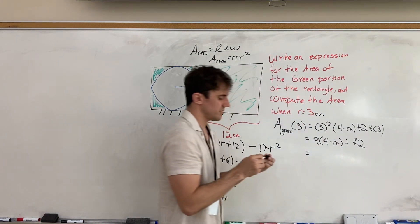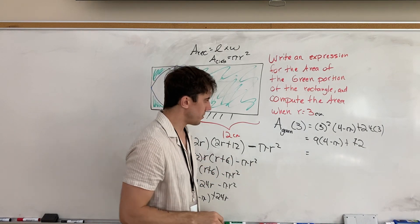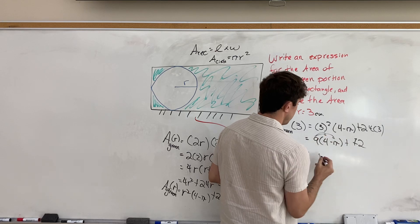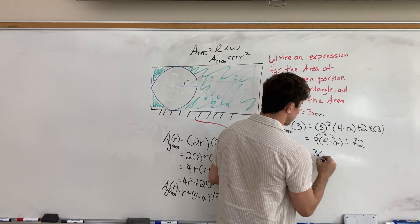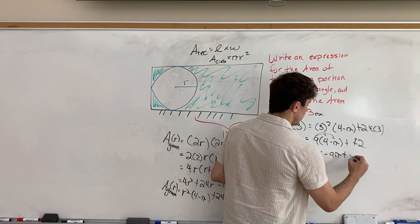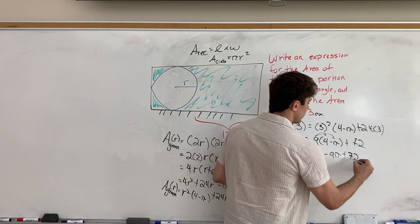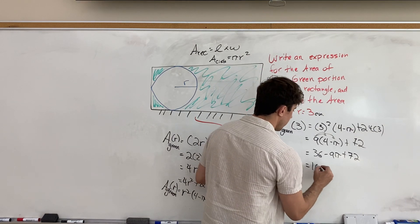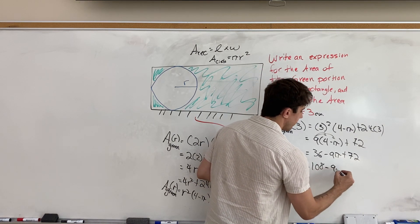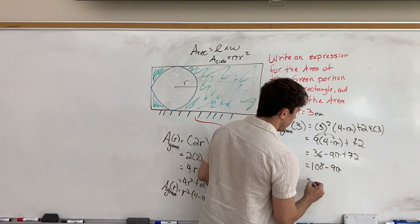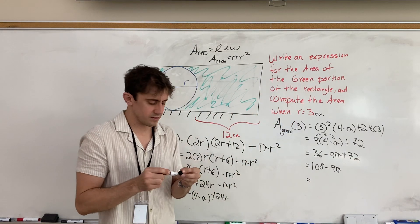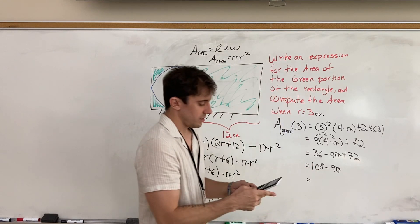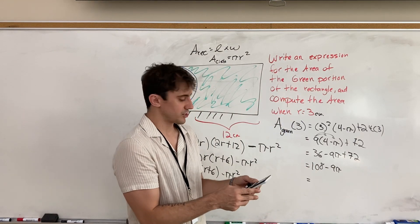And now, this is going to be some combination of pi. And I guess we could even multiply through, so we could do 9 times 4 is 36, minus 9 pi, plus 72. And 36 plus 72 is 108, so we get 108 minus 9 pi. And now, that might be the simplest way we can write that. We're going to have to calculate that later, because that's going to be an irrational value.